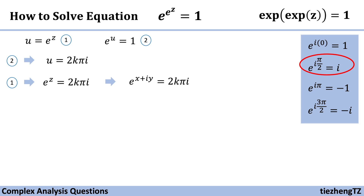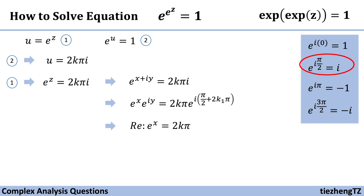Considering the period of 2kπ, we can rewrite the equation as e^x · e^(iy) = 2kπ · e^(i(π/2 + 2k₁π)), where k and k₁ are integers.